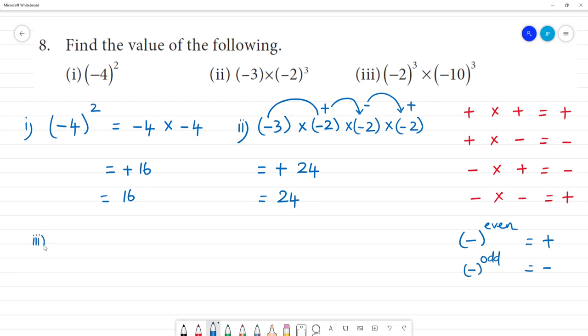Now the third one. What's given? Minus 2 to the power 3 multiplied by minus 10 to the power 3. Here, what formula is applicable? a to the power m multiplied by b to the power m.